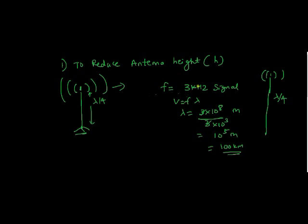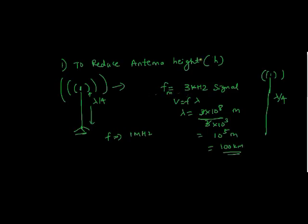By using modulation technique, the height of the antenna will be scaled down. For example, our message signal is around 3 kHz, but by using modulation, this frequency will be translated into a different spectrum — usually around 1 MHz. That is the carrier signal plus the message signal. We will see this in detail in coming videos. For now, understand that the message signal will be translated into another spectrum, where the frequency will be much higher than the message signal, but the information will remain the same.